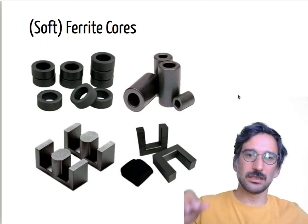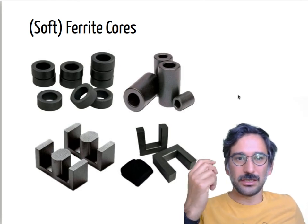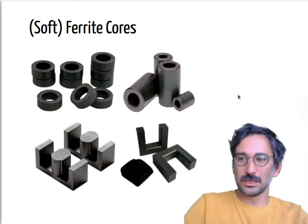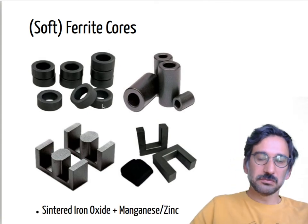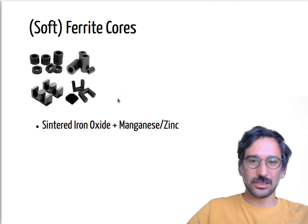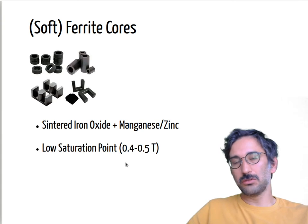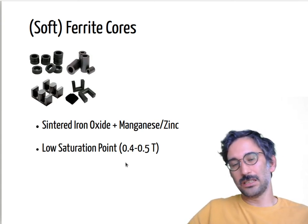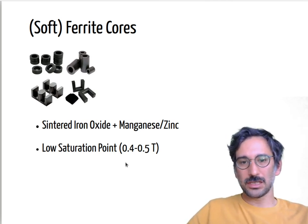What we use in power electronics is soft ferrite cores — one of the most common materials. It's a powder material sintered into any shape you want: toroid shapes, cylindrical shapes, U-cores, E-cores. It's made of iron oxides with manganese and zinc additions. Ferrite cores typically have low saturation points — around 0.3 tesla for some materials — compared to the 1.5–1.8 tesla you may remember for electrical steel laminations.